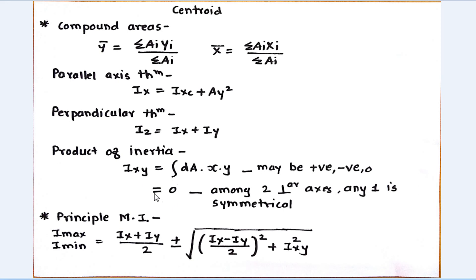For example, for circular cross-section, Ixy equals zero. Next is principal moment of inertia. Imaximum and Iminimum equals Ix plus Iy divided by 2, plus or minus square root of (Ix minus Iy divided by 2) squared plus Ixy squared.